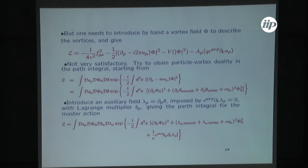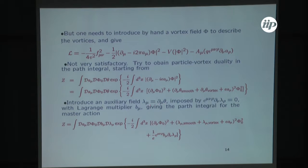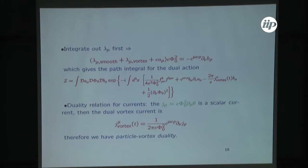To me that is not very satisfactory, so I would really like to obtain it via some master action for the duality in the way one always does. We can introduce an auxiliary field for d_mu theta, and then impose that this relation holds through the constraint that epsilon d lambda = 0, enforced with a Lagrange multiplier. The path integral for the master action is given here. If we integrate over lambda_mu we get this equation of motion, and if we substitute it back in the action we obtain the dual path integral.